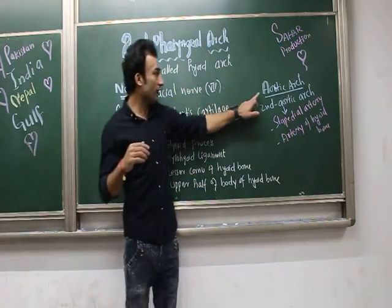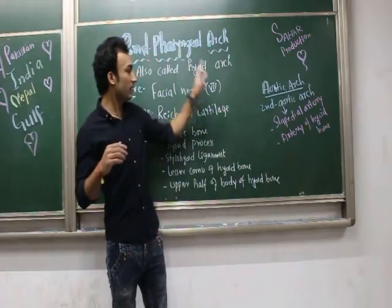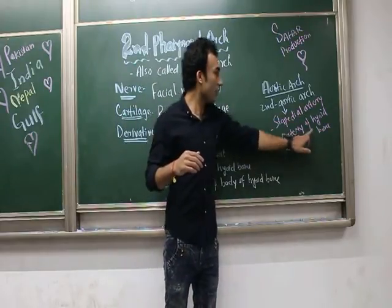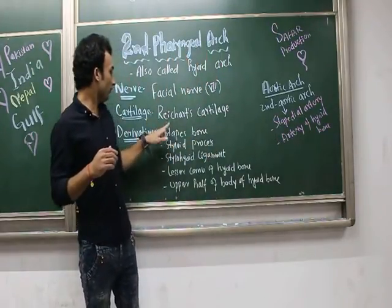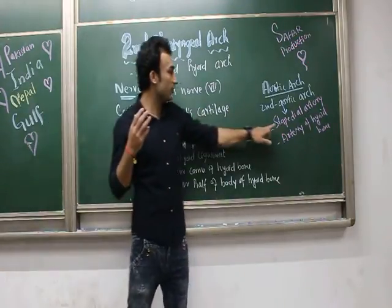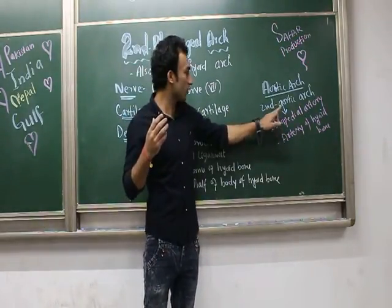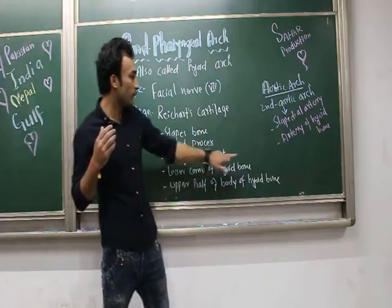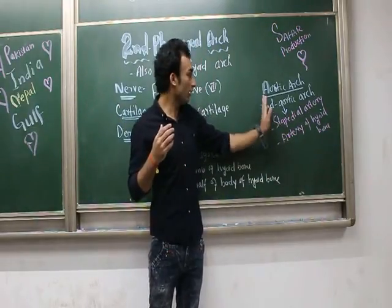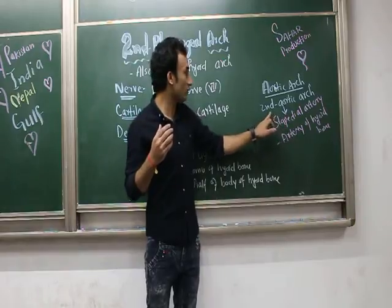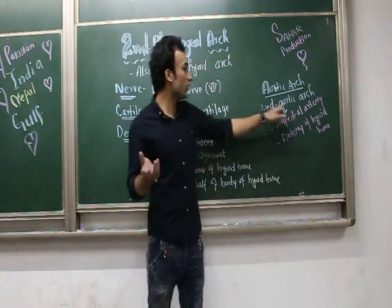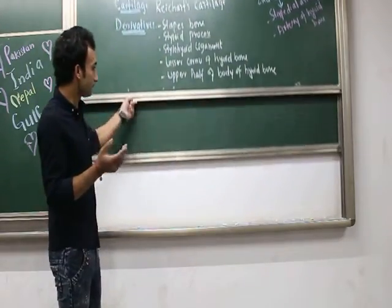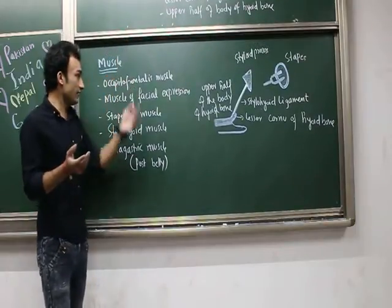The second aortic arch gives rise to the stapedial artery and the artery of the hyoid bone. It is called the artery of the hyoid bone because it supplies structures like the upper half of the body of the hyoid bone and the lesser horn of the hyoid bone. Remember this for MCQs.